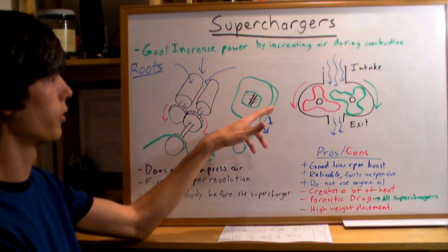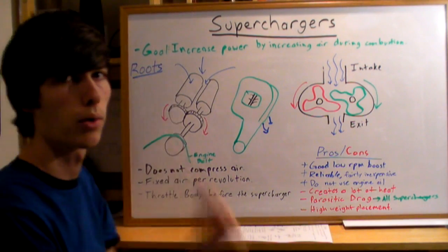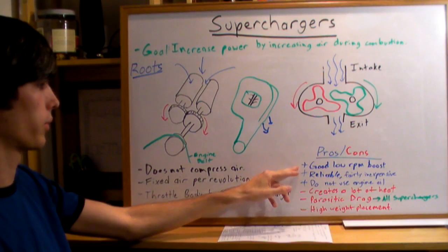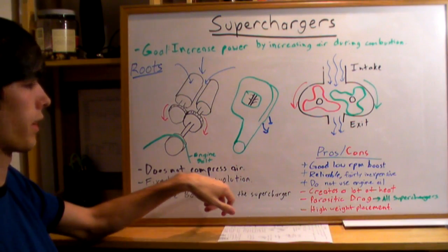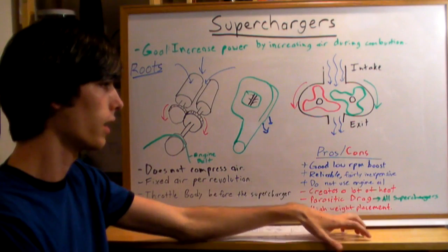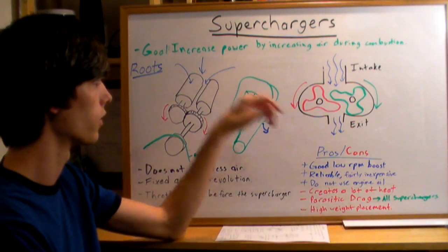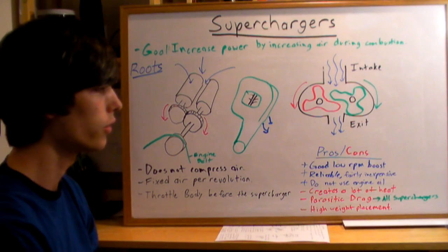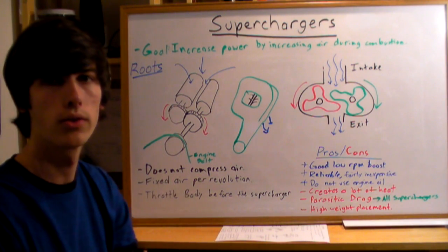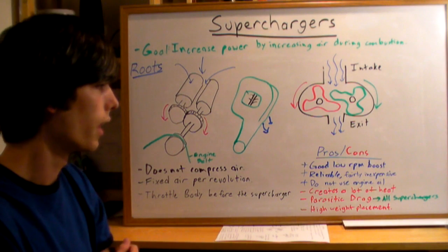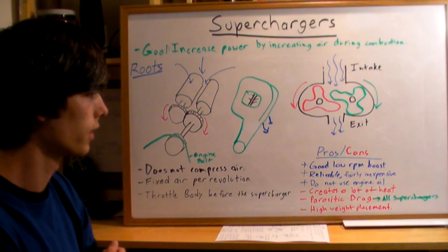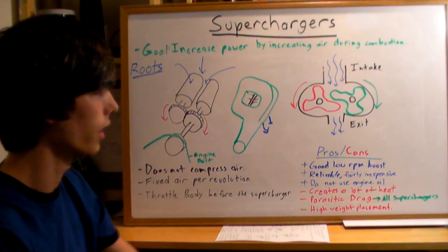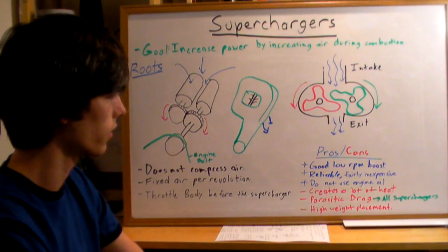Some pros and cons of superchargers, and specifically a roots or blower type supercharger. You'll have good low RPM boost, and once again that's because you're going to have a fixed amount of air per revolution. They're reliable and fairly inexpensive. This is specifically referring to roots superchargers. They do not use engine oil - neither the roots nor the twin screw use engine oil, so that's a plus.